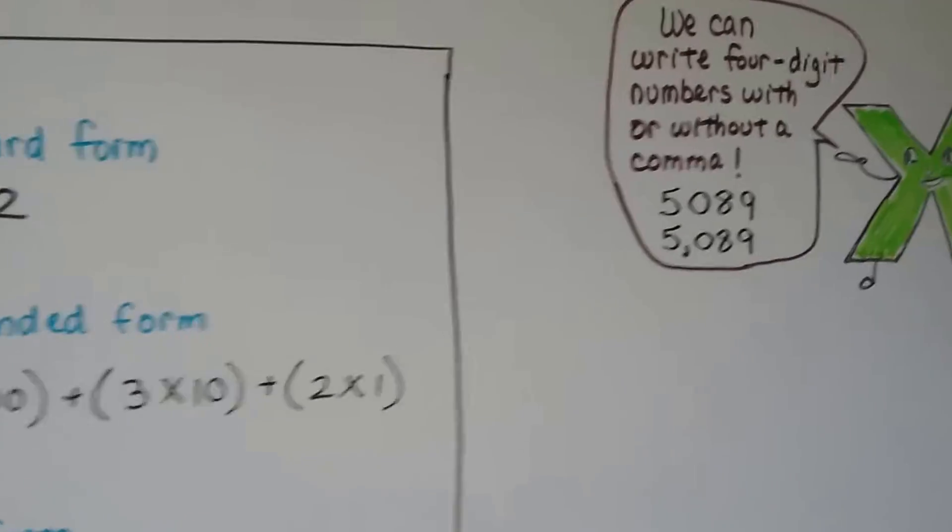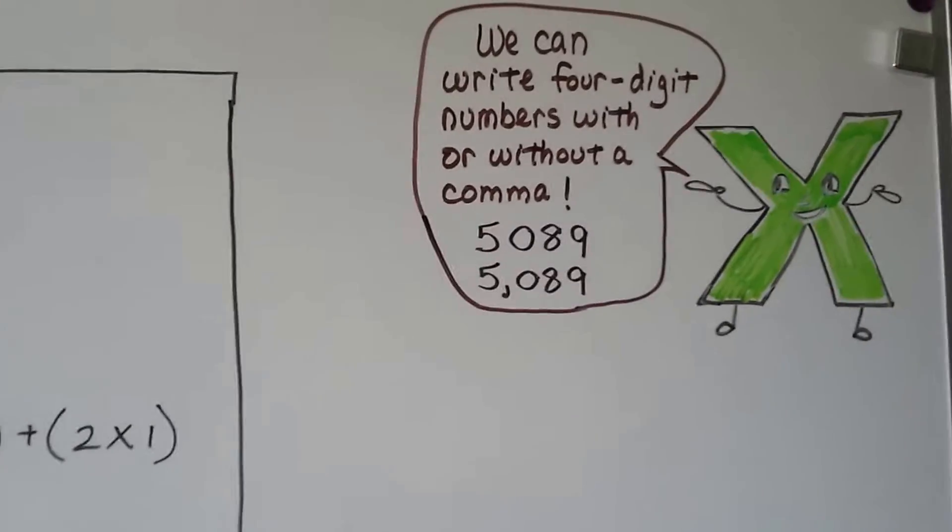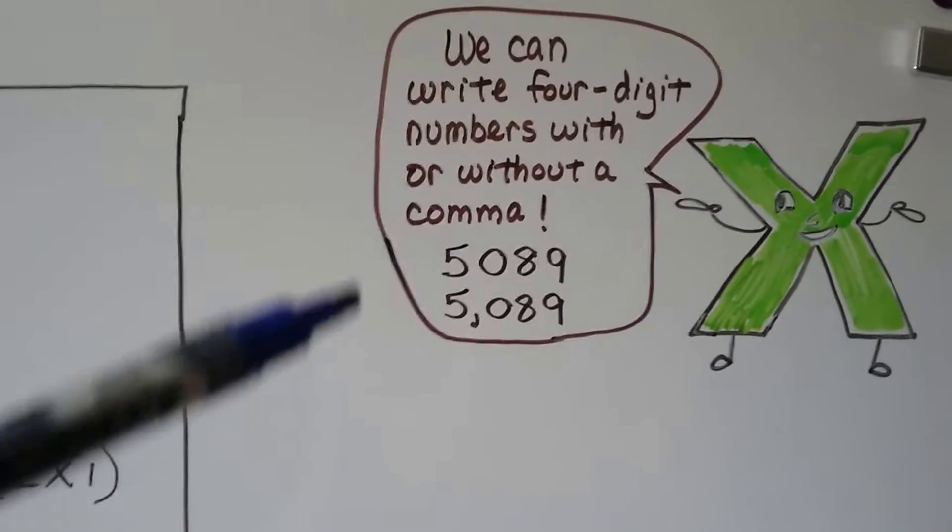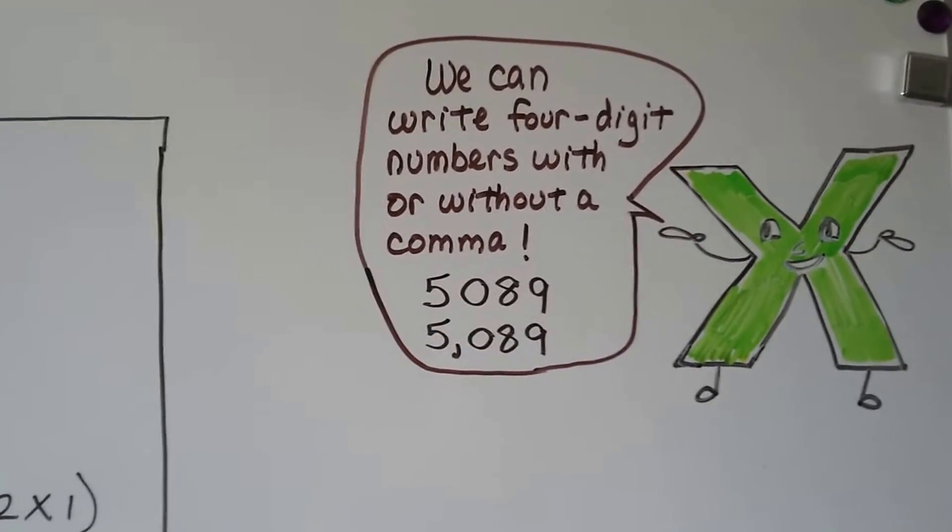And we can write four digit numbers with or without a comma. Five thousand eighty-nine can be written with or without a comma, and it would be correct.